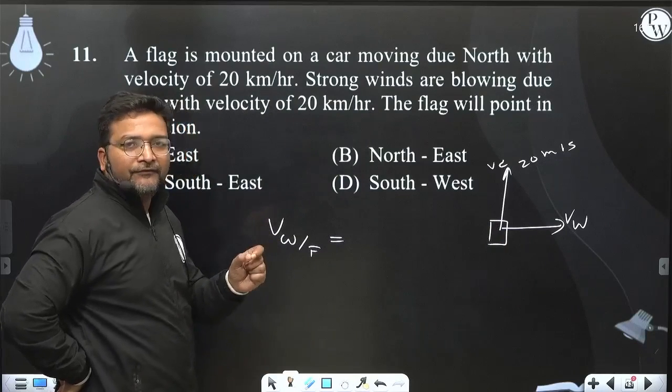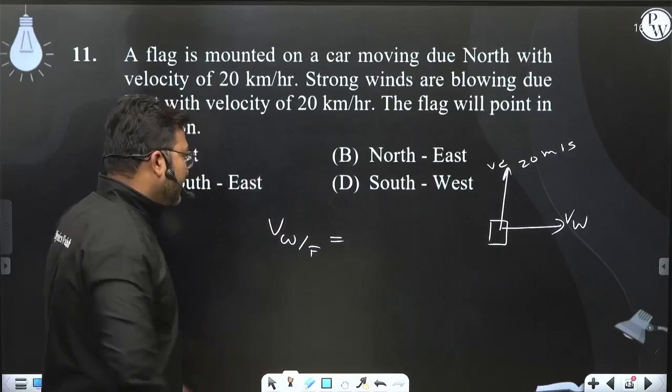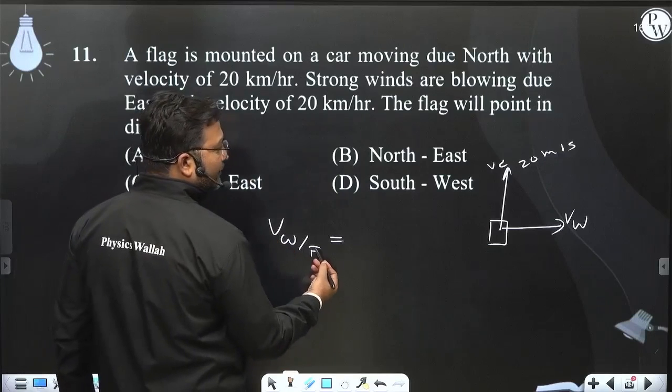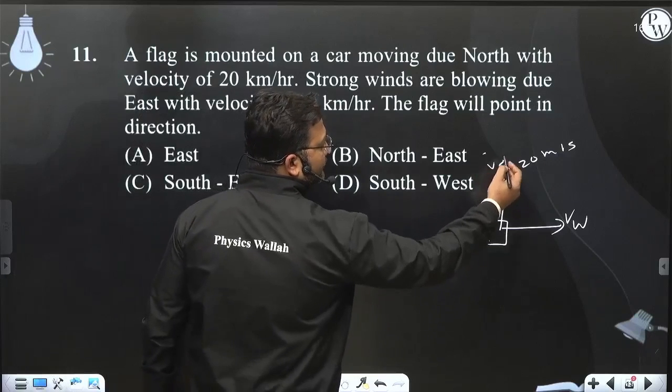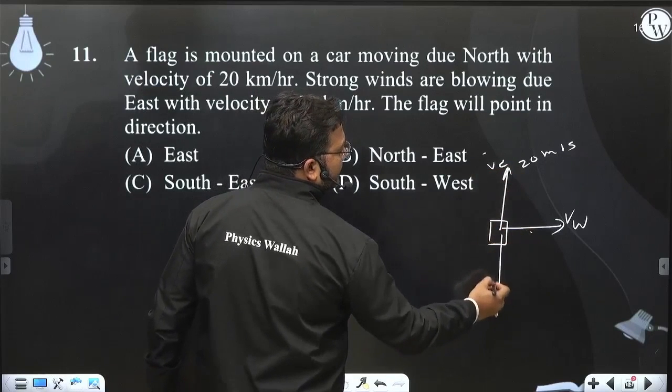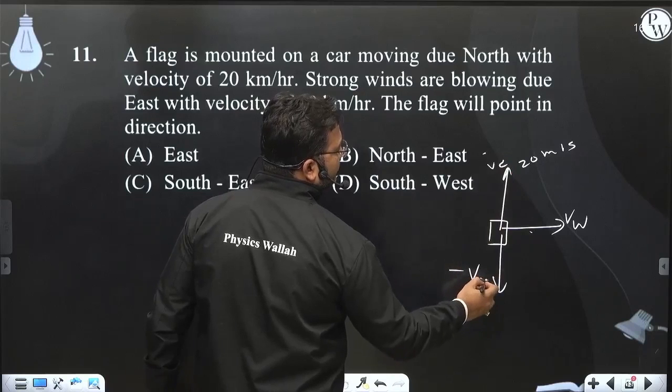So velocity of wind with respect to flag - if you want to calculate it, the flag is on the car, so we need to add minus the velocity of the flag.